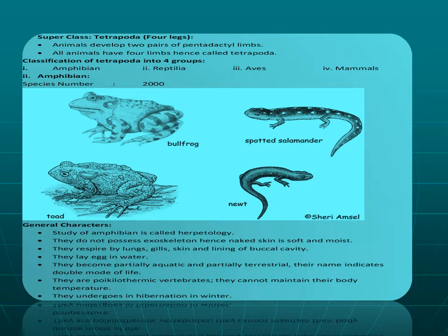Before going to the general characteristics of Amphibia, let us describe the meaning of the word. Amphi means dual, bia means bearing — meaning they possess a dual or double life. At the larval stage they are aquatic, living in water, and at the adult stage they move toward land. The study of amphibians together with reptiles is known as herpetology.